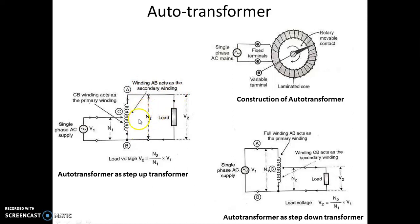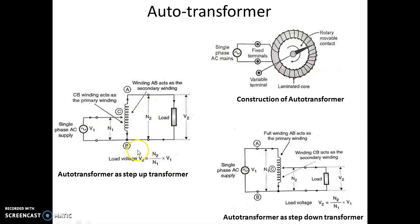Because the secondary turns are more than the primary winding turns, this transformer acts as a step-up transformer. The output voltage is given by V2 = (N2 / N1) × V1. Because N2 is greater than N1, V2 will be greater than V1, so in this case the auto transformer acts as a step-up transformer.